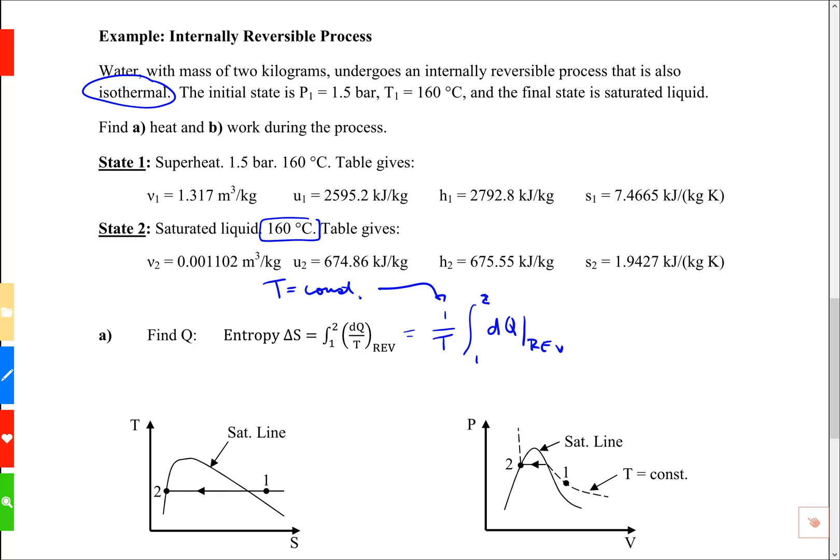So 1 over T integral from 1 to 2 of dQ reversible. And I can do that because for this process T is constant. And then I can integrate dQ integrates to Q and I'm going to write that as 1 over T Q for the process from 1 to 2. And now I can solve for Q.